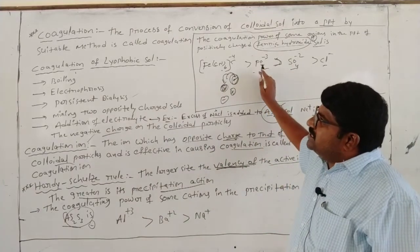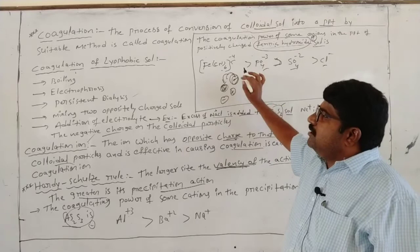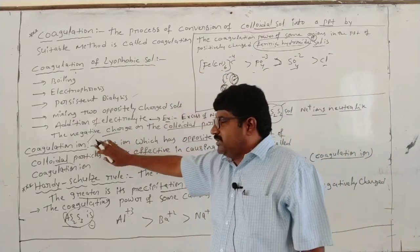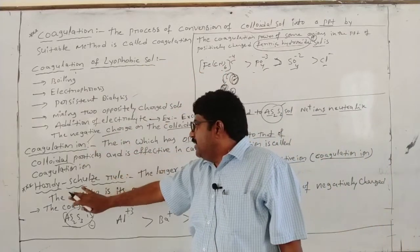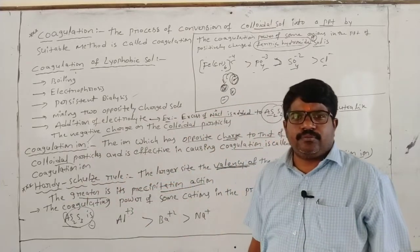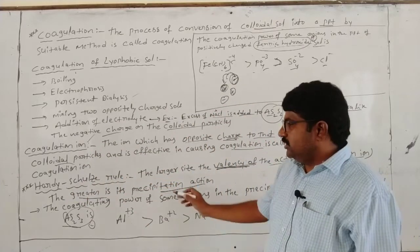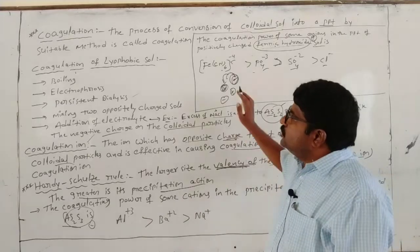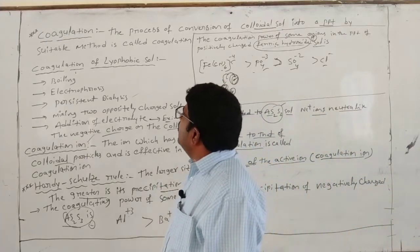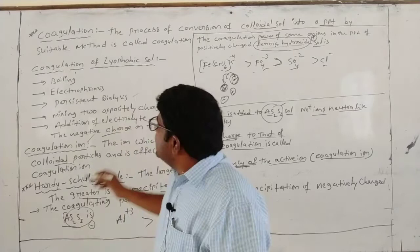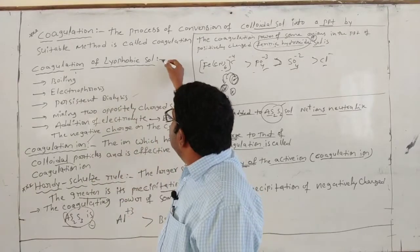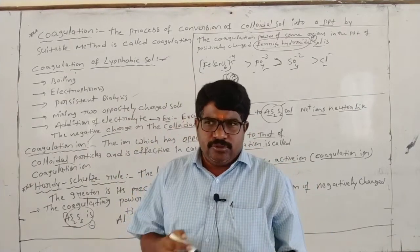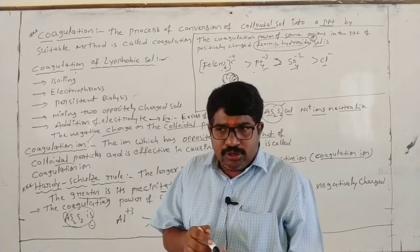So this is coagulation — coagulation of lyophobic salts, coagulation ion, and the Hardy-Schulze rule. Next is coagulation of lyophilic salts. Lyophobic is completed; now how are lyophilic salts coagulated? The coagulation of lyophilic salts depends upon two factors: one is the charge on colloidal particles, and the second is solvation of colloidal particles.